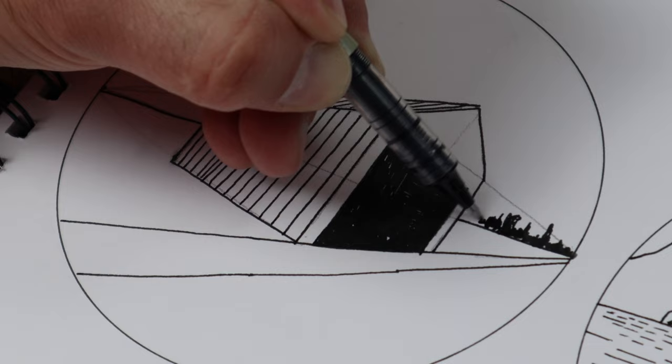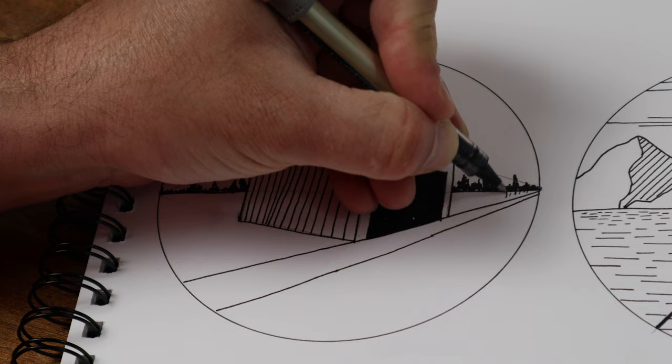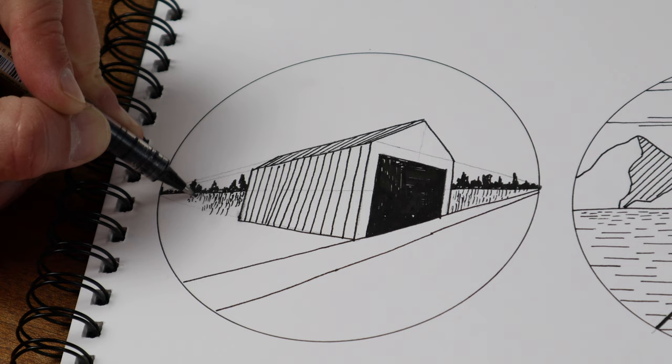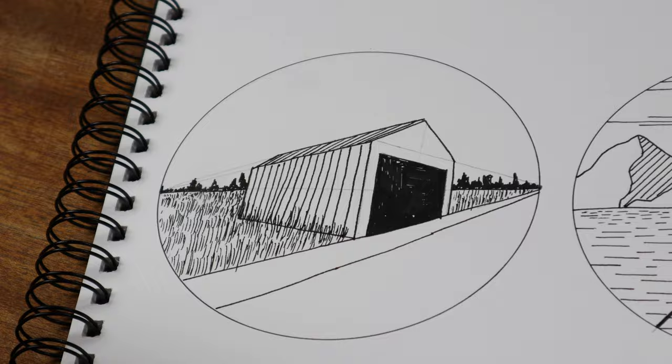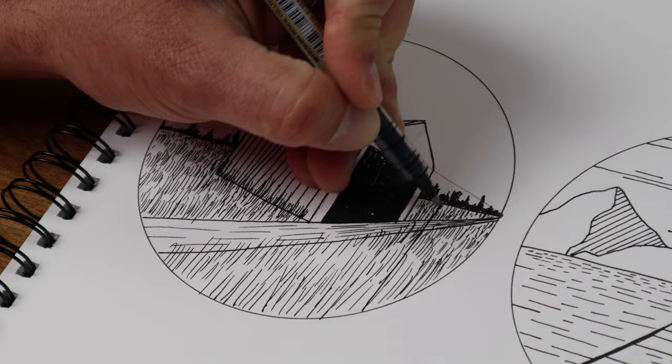Use scribbles on the horizon line to make distant trees. Stick loads of small lines in to make long grass or weeds. Stick some large ones in to create a foreground and create the illusion of depth.